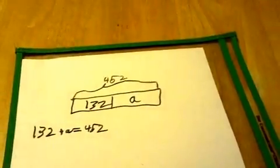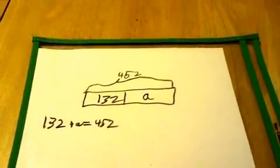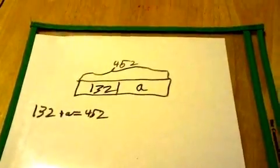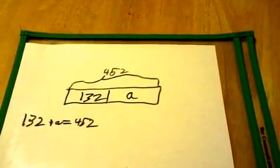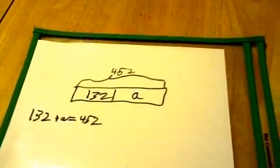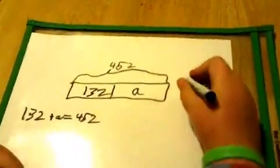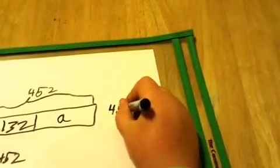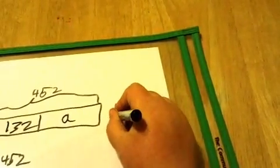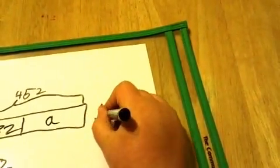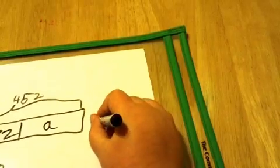Now, to figure it out, we can't just count up to 452. That would be the hard way. You can do that if you want, but I would not recommend it. The way I would do it is by doing this: 452 minus 132.